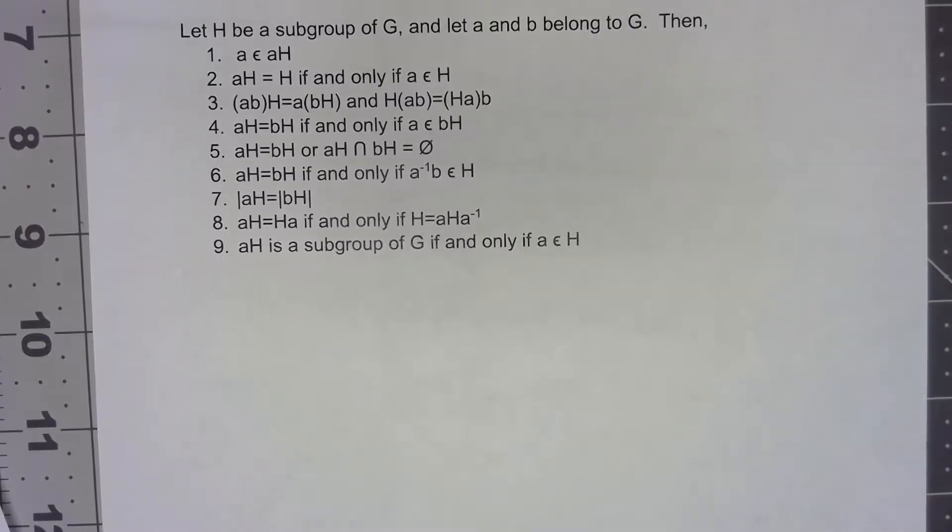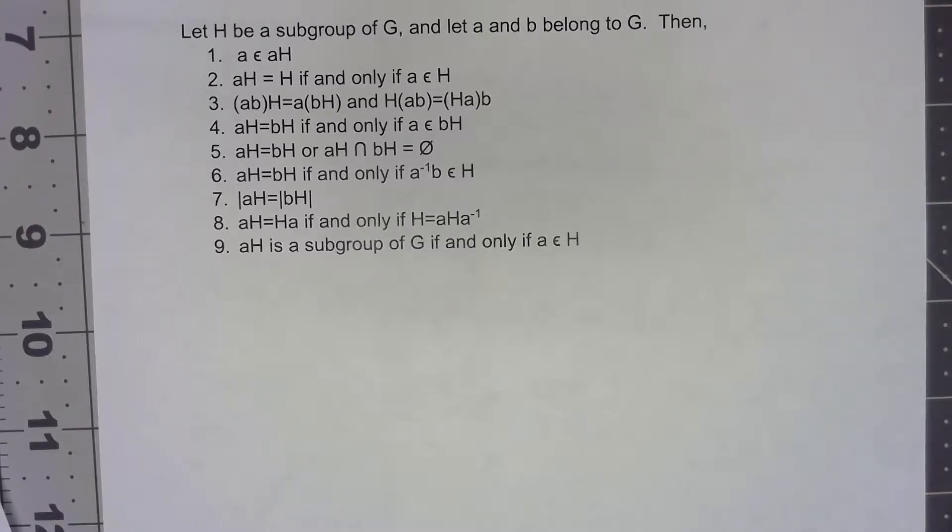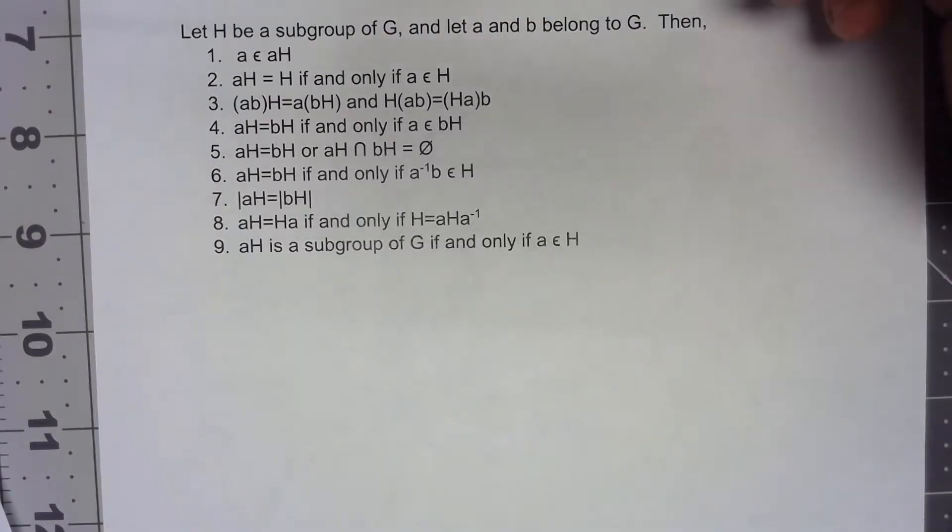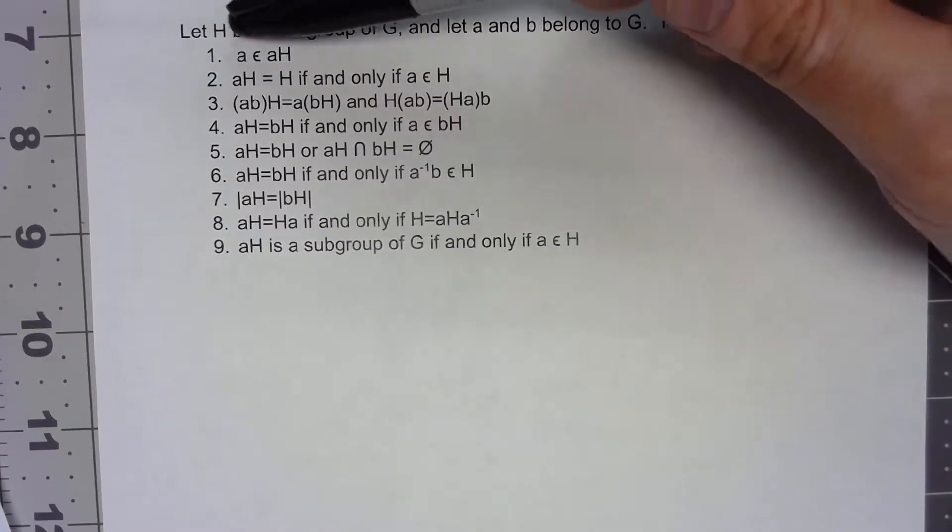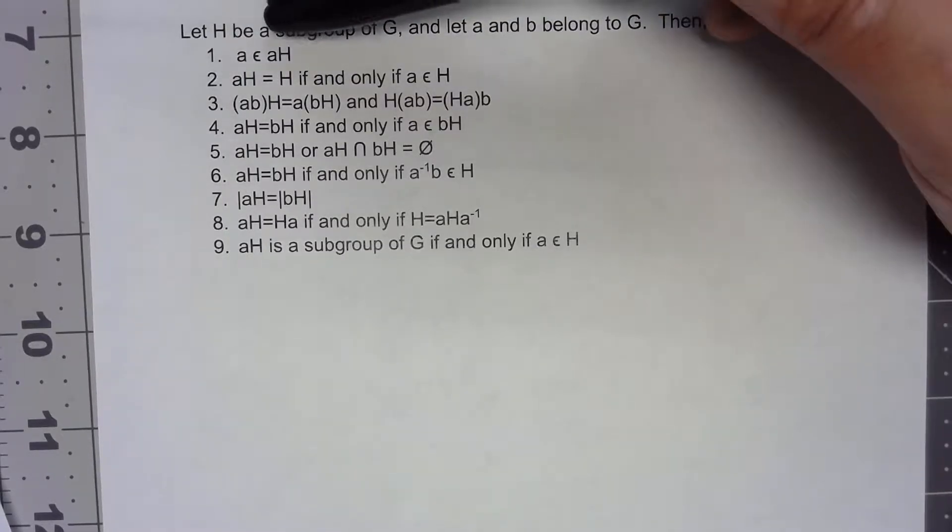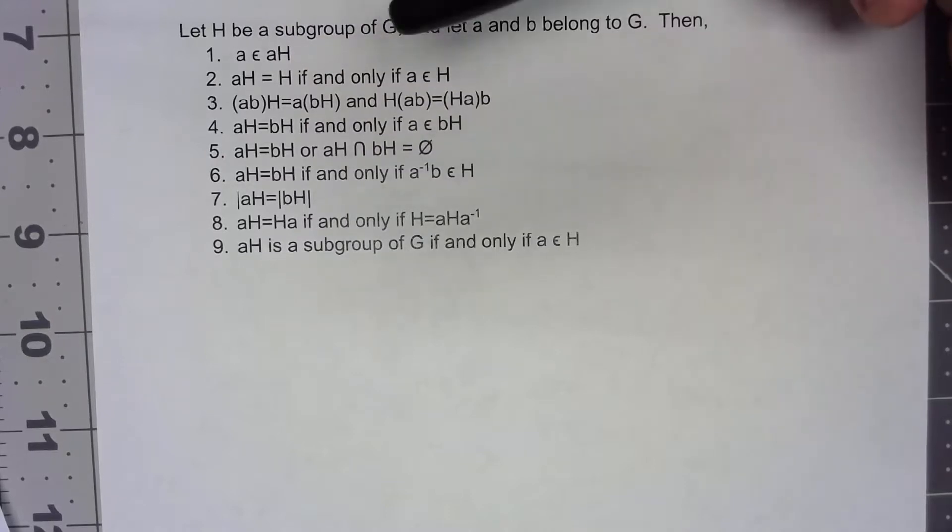Now that we've defined what a coset is, let's start looking at some properties. If you've got a group element A, then that A has to be in the coset of multiplying on the left by A.